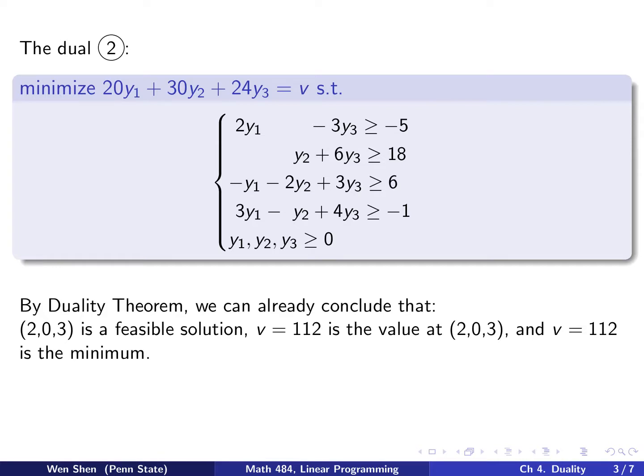Why? Because it's the max of the other problem, and V equal to 112 is actually the minimum. Let's verify this claim or conclusion by actually solving the dual using LP Assistant.